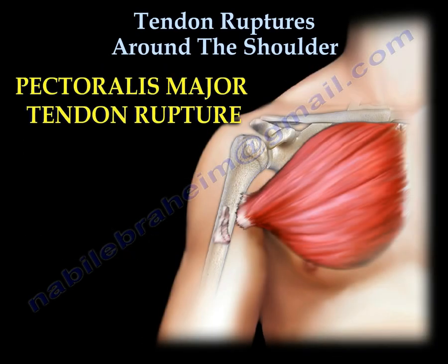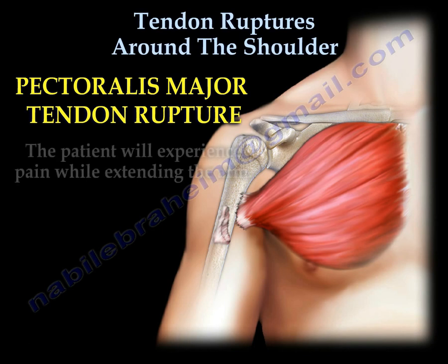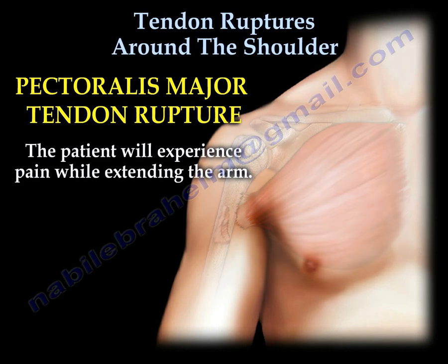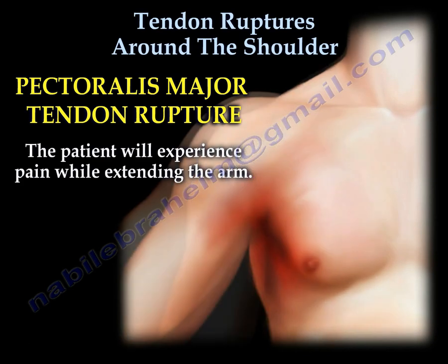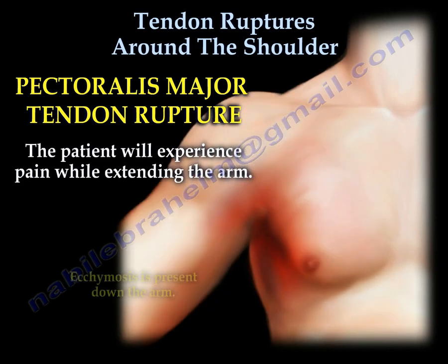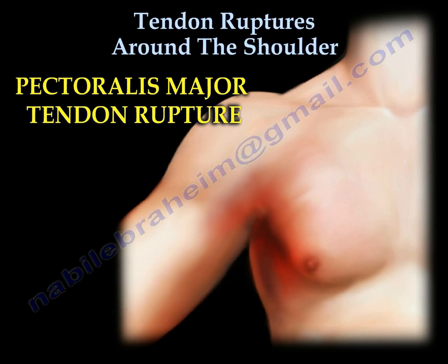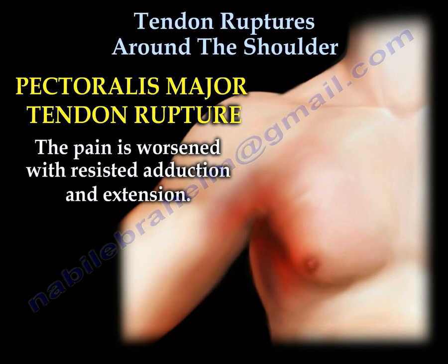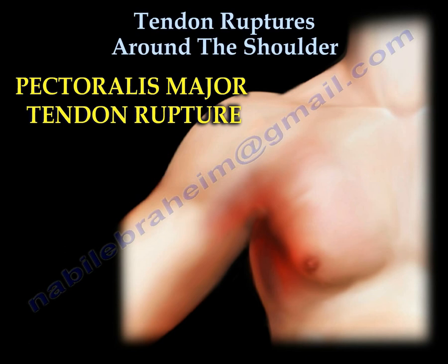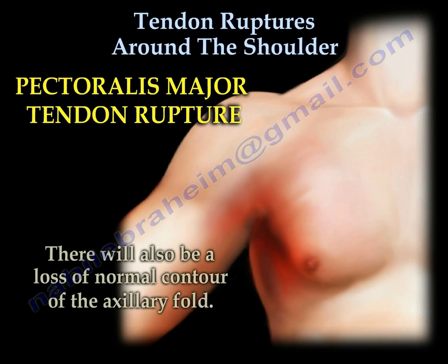Pectoralis major tendon rupture. The patient will experience pain while extending the arm. Ecchymosis is present down the arm. The pain is worsened with resisted adduction and extension. There will also be a loss of normal contour of the axillary fold.